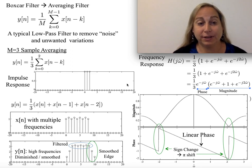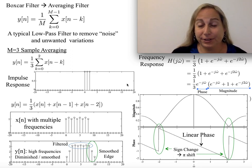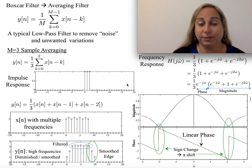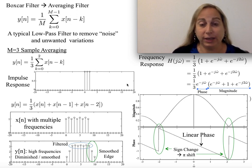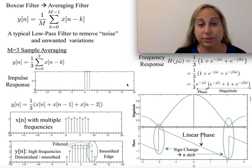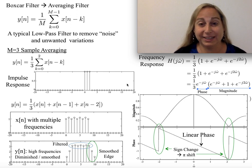I want to talk about what is often called a boxcar filter or an averaging filter. It's something you typically get when you want to take a whole bunch of inputs and compute an average over three, five, eight, or some number of inputs — typically as a way to try to remove some of the variability, some of the noise, some of the things that we know may not be there.